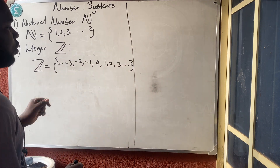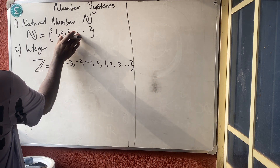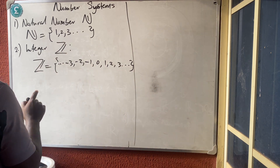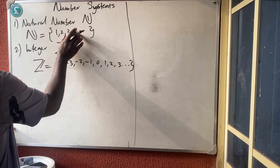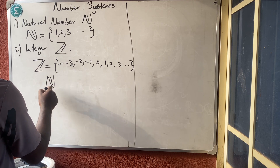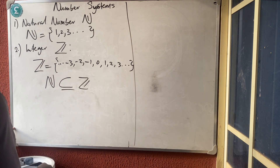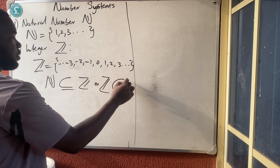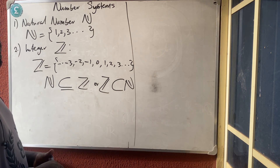If you look at this, you will discover that every natural number is equally an integer, but not every integer is a natural number. This means the set of natural numbers is a subset of integers, or you can say integers is a superset of natural numbers. I will tell you what subset and superset mean.